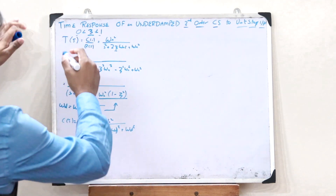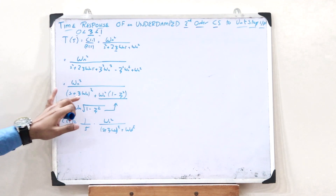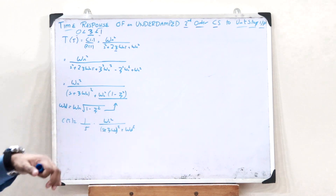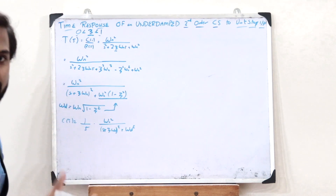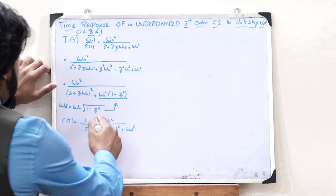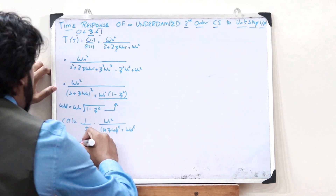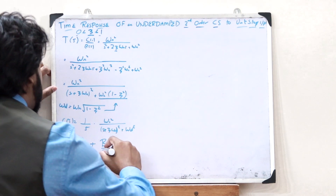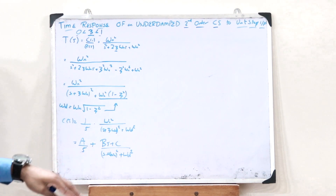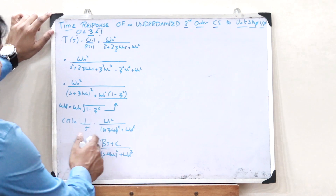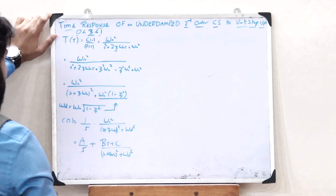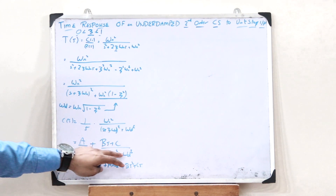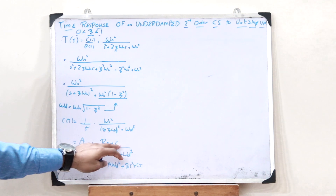To find the inverse Laplace transform, we use partial fractions. C(s) has two terms and splits as: A/s + (Bs + C) / [(s + ζωn)² + ωd²]. Taking the LCM and equating numerators gives: ωn² = A·(s + ζωn)² + A·ωd² + B·s² + C·s.